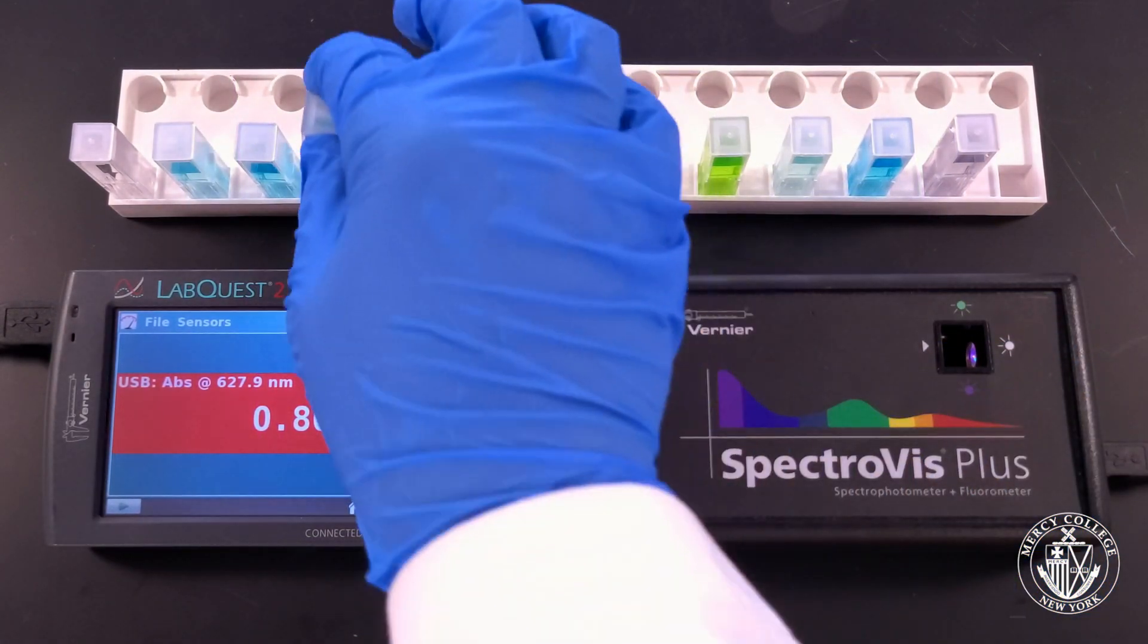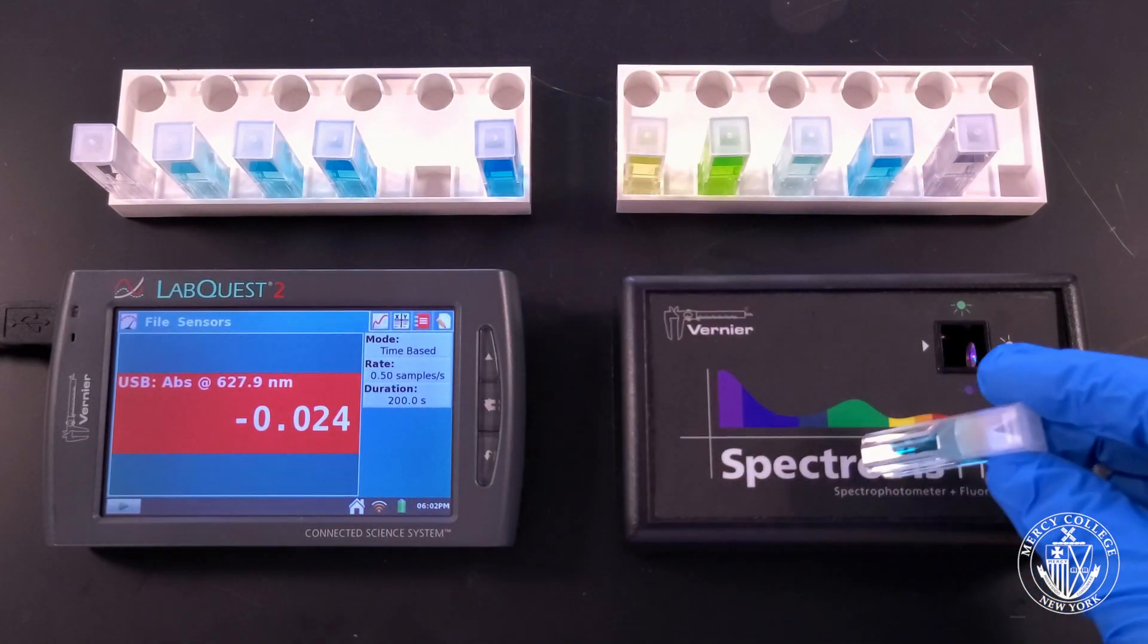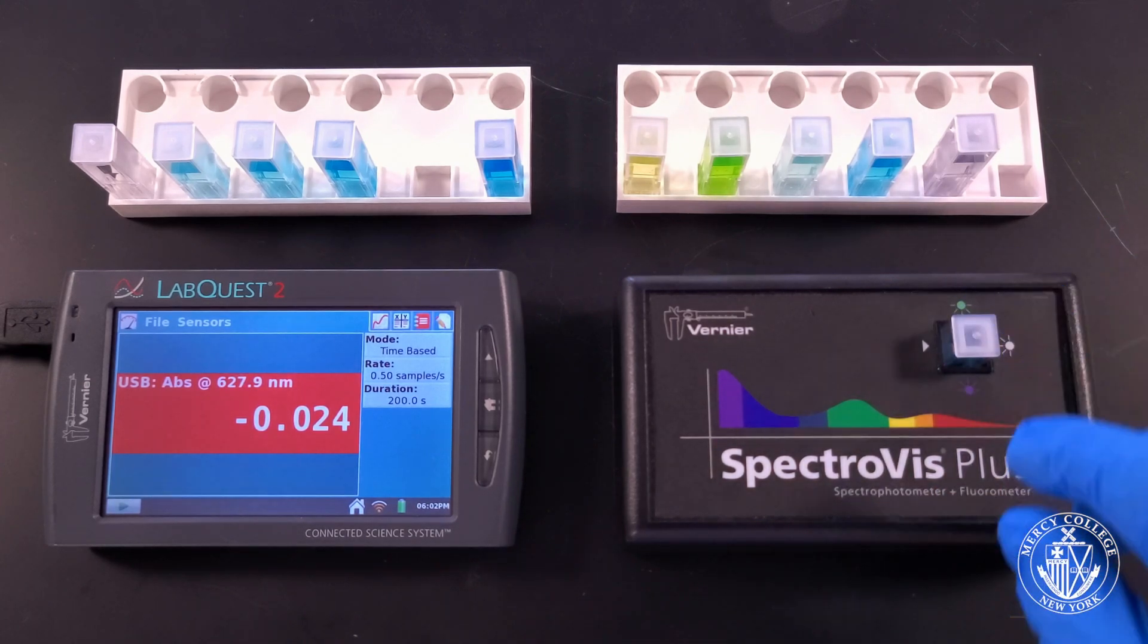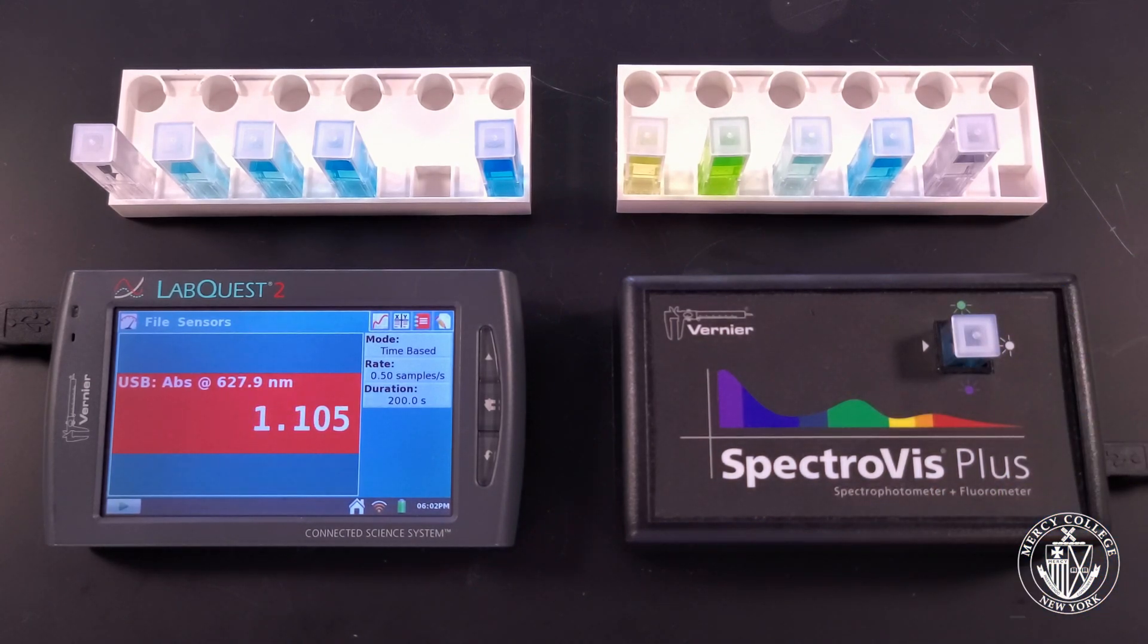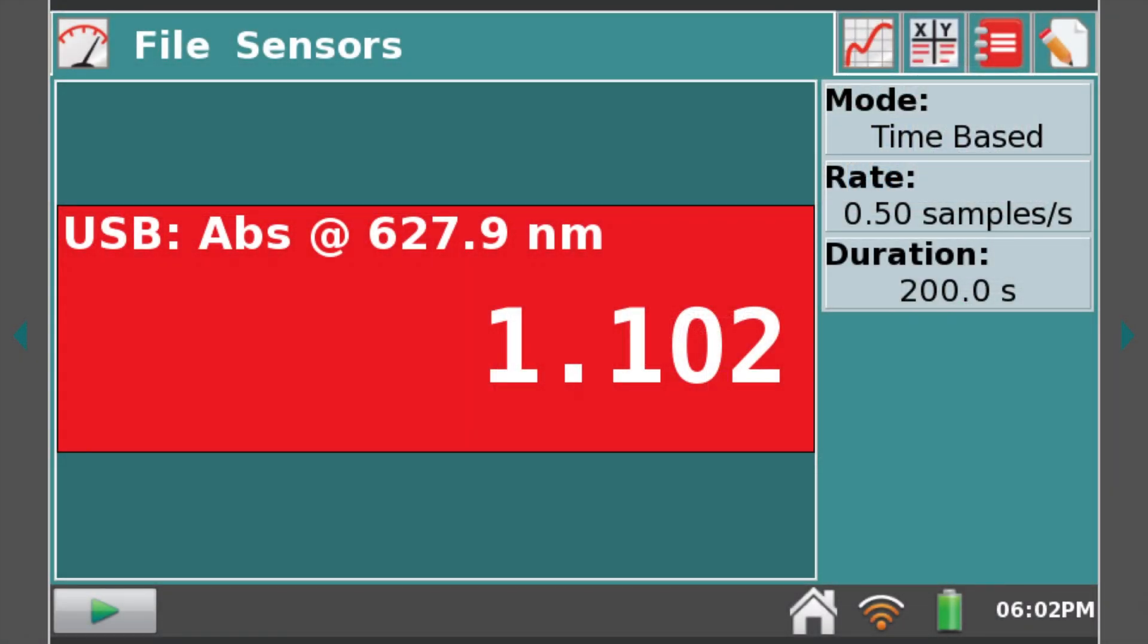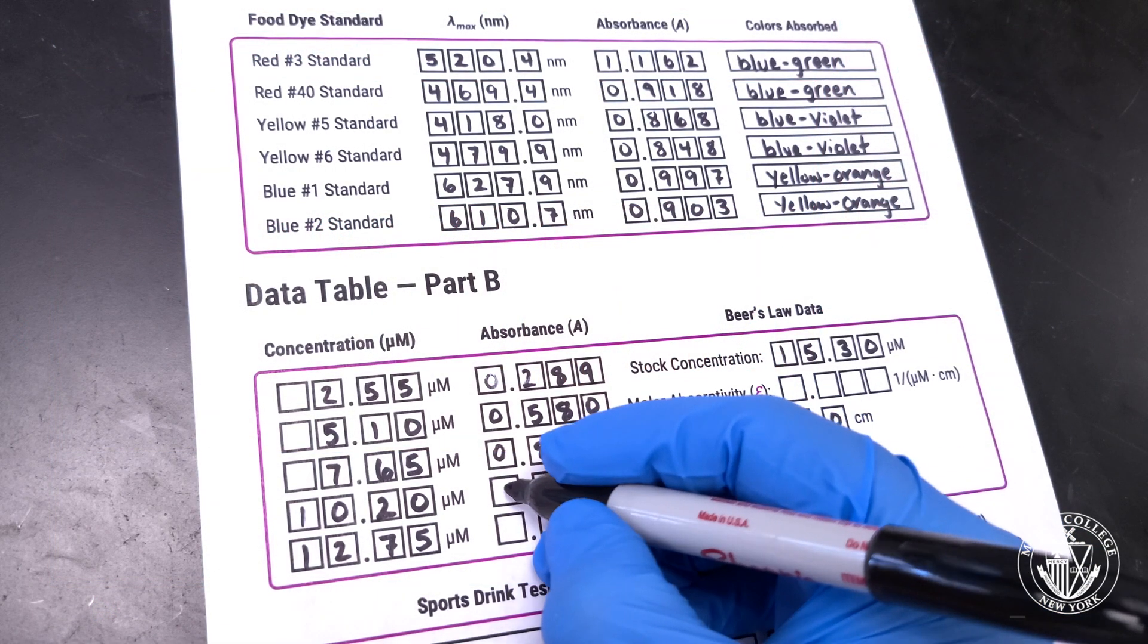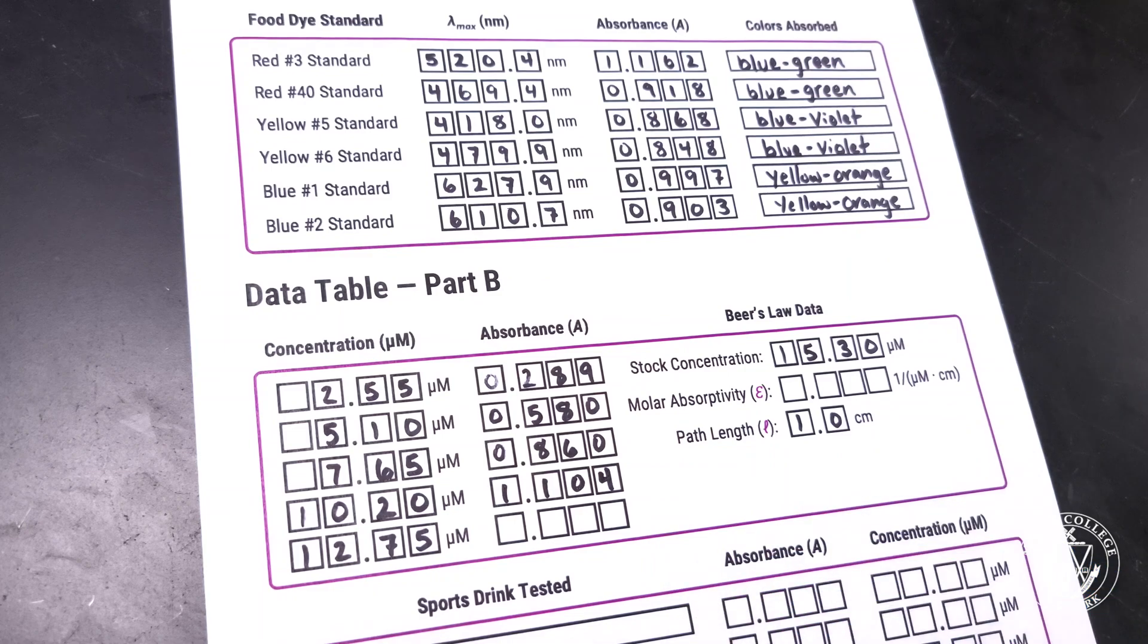As you continue to analyze your fourth and fifth dye standards, always make sure that the arrow on the cuvette aligns with the arrow on the spectrophotometer. Our fourth dye standard looks like it settled at an absorbance of 1.104.